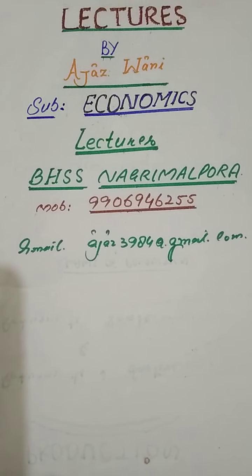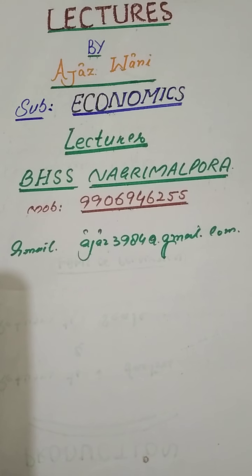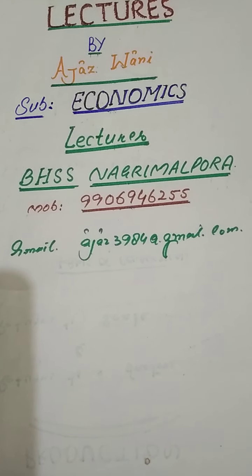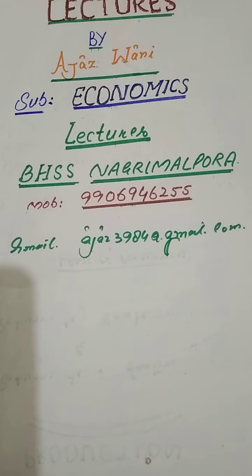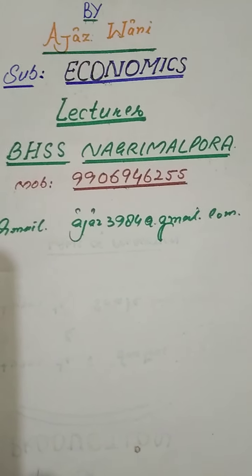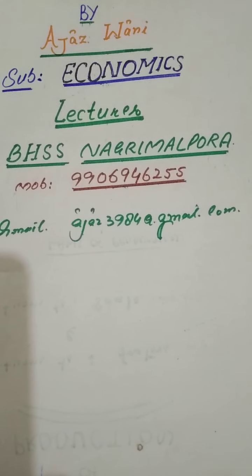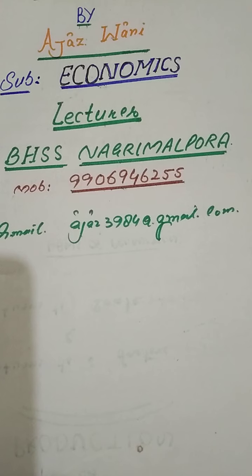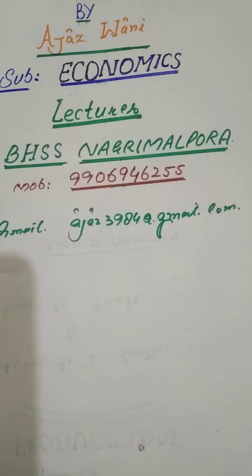Assalamualaikum dear students and viewers. In the previous lecture we discussed what a market is. In economics, market does not refer to any particular place but the entire area where buyers and sellers of a commodity are in such close contact that sale and purchase is affected. It is defined as any region in which buyers and sellers are in such free intercourse that the price of a good tends to equality easily and quickly. Market is that mechanism by which buyers and sellers are brought together — it's not necessarily a fixed place.